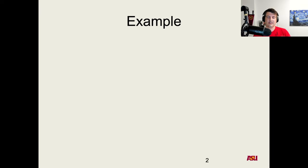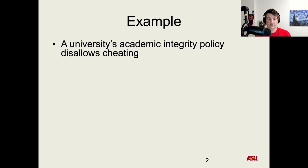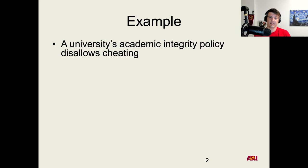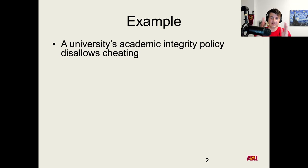To understand that, let's go through an example. As I'm going through this, I want you to be thinking about who has access to what. In this example, let's say a university — it could be your university, it could be Arizona State University. The university has an academic integrity policy that every student follows that disallows cheating. You can literally just Google for your school name and academic integrity policy to see exactly what they mean.